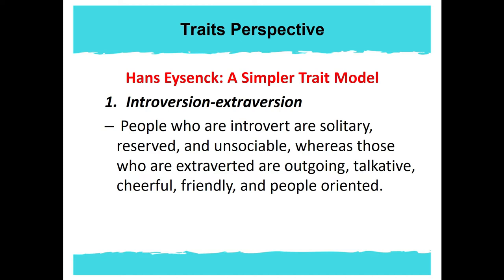Another perspective is according to Hans Eysenck, and this is a simpler trait model. We have here introversion and extroversion. People who are introverts are solitary, reserved, and unsociable, whereas those who are extroverted are outgoing, talkative, cheerful, friendly, and people-oriented. In contrast to Cattell's model, which organized personality traits into a complex hierarchy, Hans constructed a simpler model of personality.